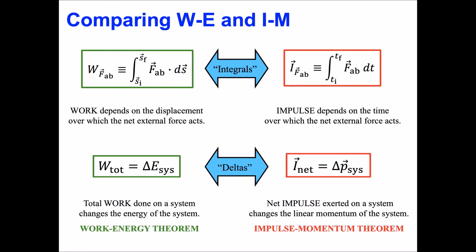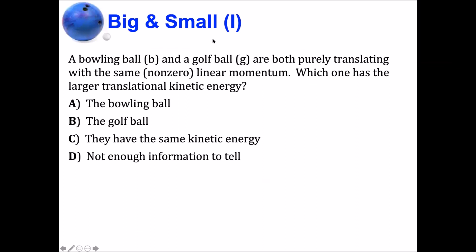We want to study a set of problems involving a bowling ball and a golf ball, both undergoing pure translational motion. In this particular example, they're going to have the same non-zero linear momentum. The question we want to address is: which one of the balls has the larger translational kinetic energy? Will the bowling ball have more kinetic energy than the golf ball, will they have the same, or is there not enough information to tell? Think about this, and we'll get back to you with the solution in the next video.